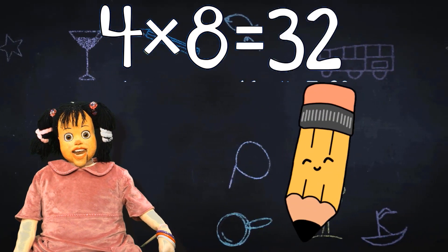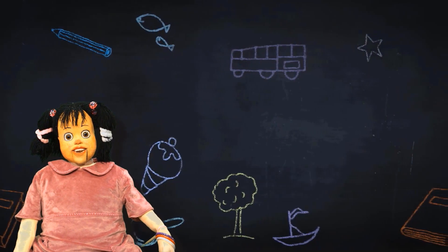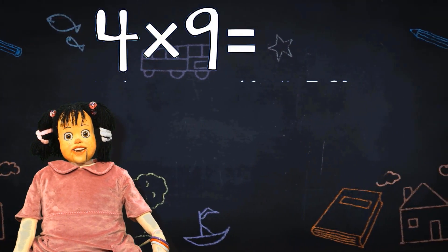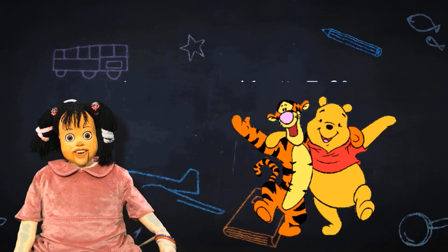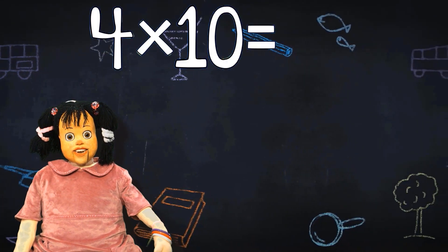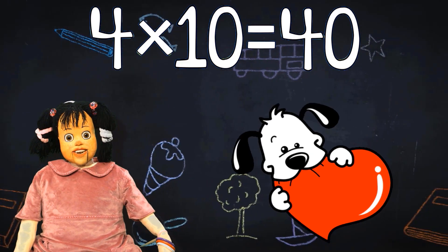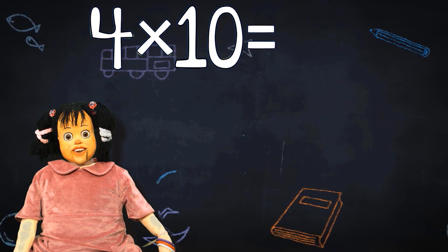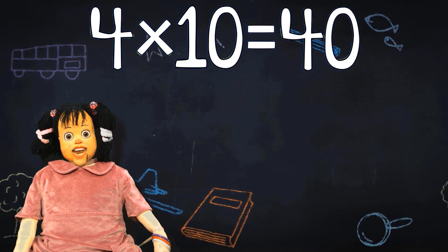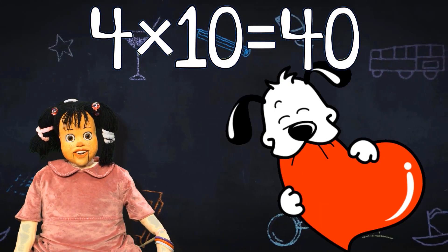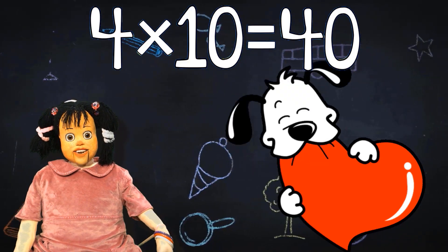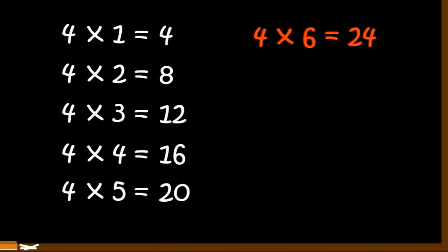4 times 8 equals 32, ders zamanı şimdi. 4 times 9 equals 36, arkadaşlar ayağa kalktı. 4 times 10 equals 40. Isırırım seni 40, 4 times 10 equals 40.